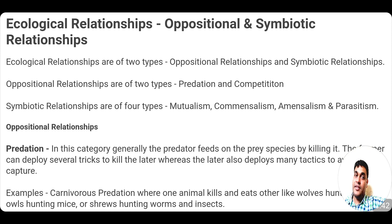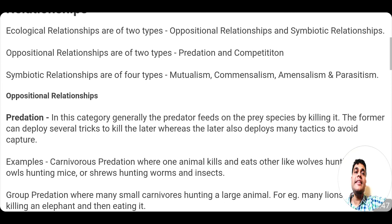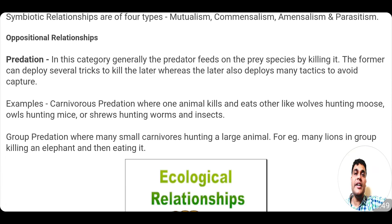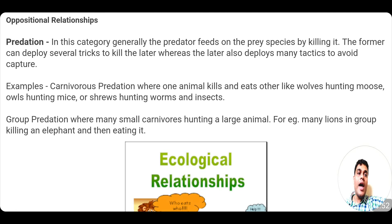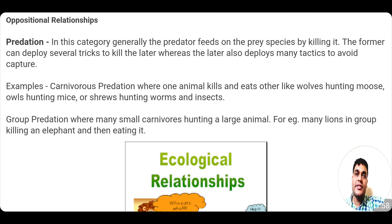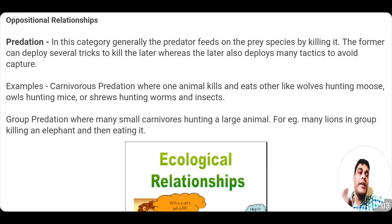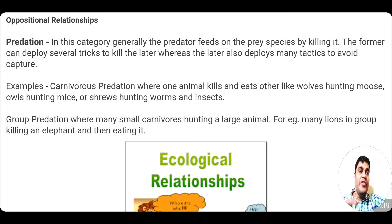Coming to oppositional relationships — in this, two types of relationships are there: first is predation and second is competition. Opposition means relationships which are in stark contrast to each other. In predation, the predator feeds on the prey species by killing it. For example, a lion in a jungle kills a deer for its food.